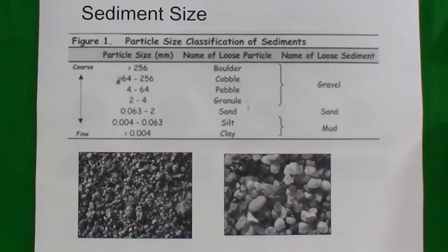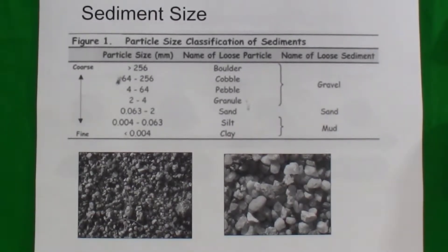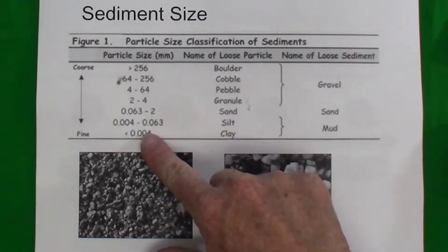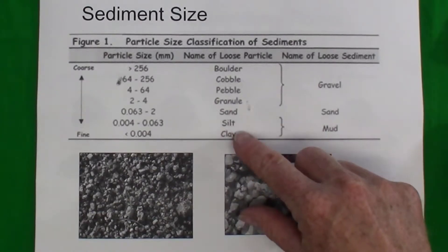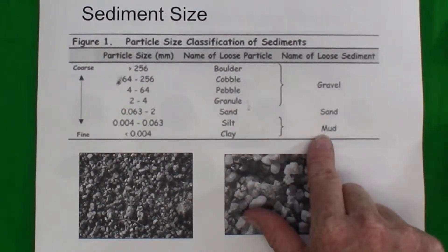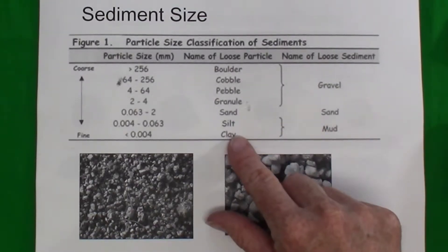When identifying sedimentary rocks, we first ask ourselves if they are clastic or non-clastic. If they are clastic rocks, we have to determine the size of the clast. The sediment size categories are based on particle size. Broadly, clay and silt can be lumped together as mud — these are particles too small to be distinguished with the naked eye.